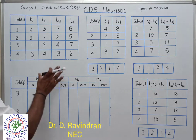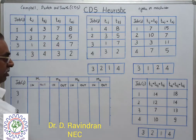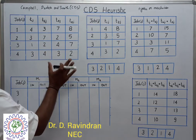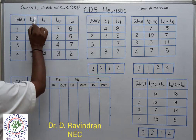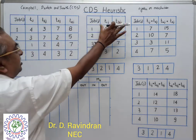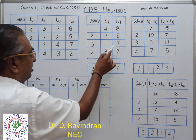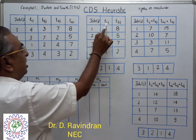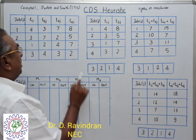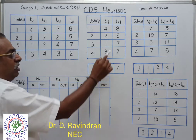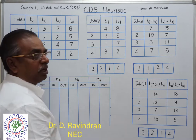In this heuristic, we find the sequence based on Johnson's algorithm by combining machines individually as well as combinedly. In the first table, the first machine and the last machine are considered separately. The processing time of the first machine — 4, 3, 1, 3 — and the last machine — 8, 5, 7, 2 — are used to find a sequence. Based on Johnson's algorithm, the sequence obtained is 3, 2, 1, 4.